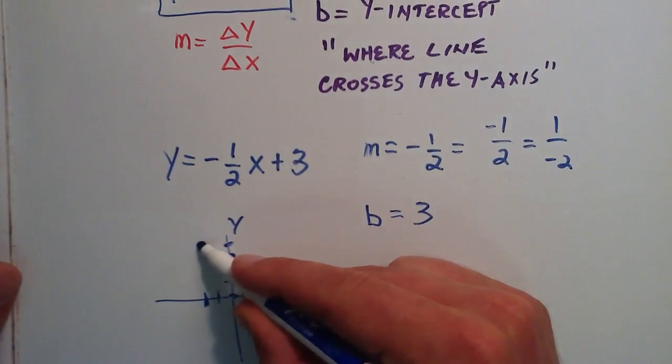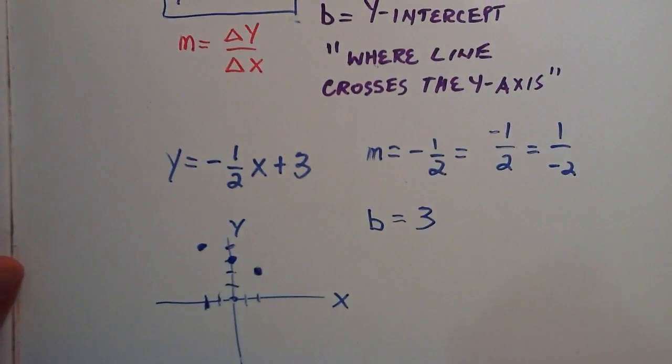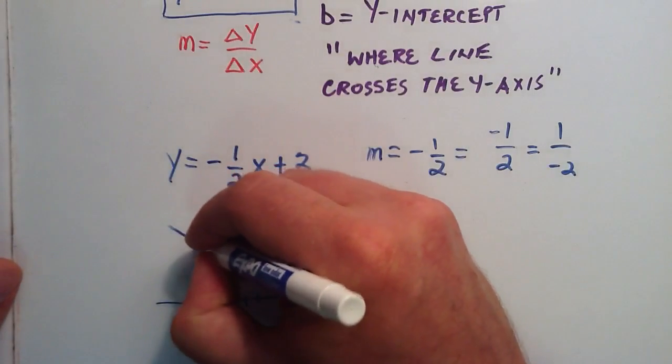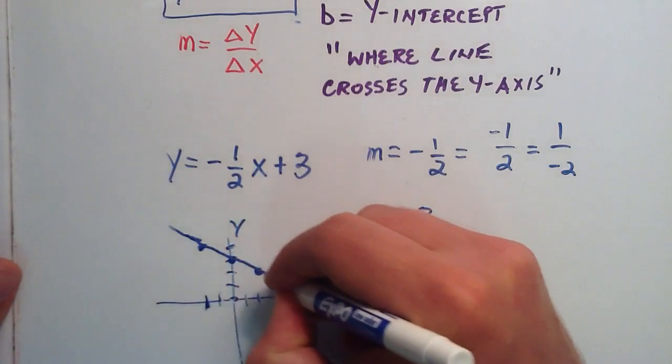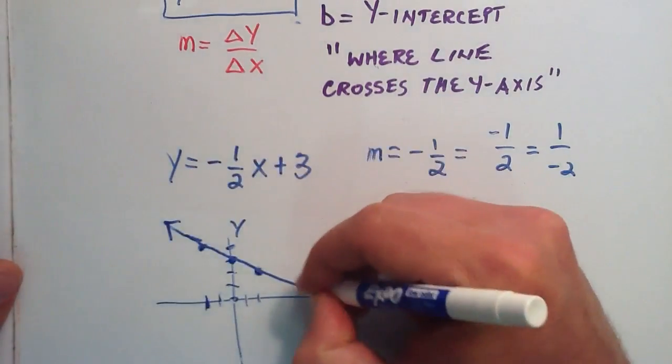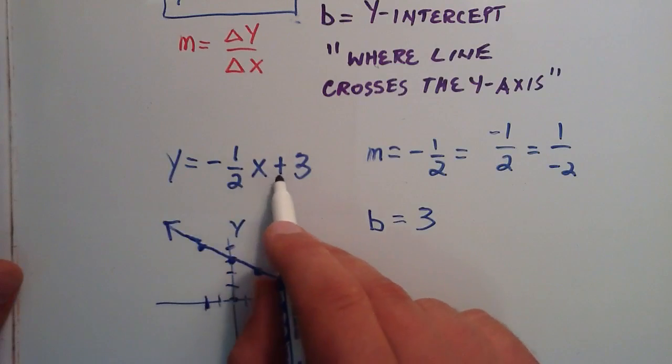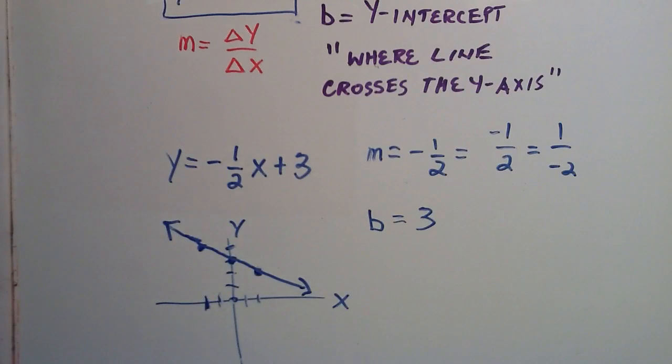So the positive one and the negative two give us another point on our line. And you can see that it didn't matter which one of these interpretations of the slope we used. They all fall on the same line. So we simply connect the dots here. And we've made a rough sketch of the line y equals one-half x plus three.